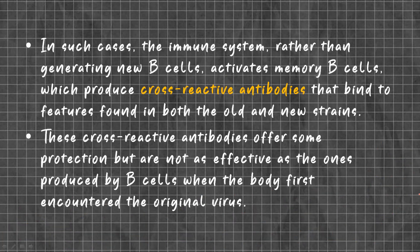In such cases, the immune system, rather than generating new B cells, activates memory B cells which produce cross-reactive antibodies that bind to epitopes found in both old and new strains.